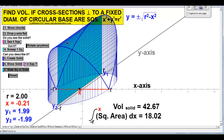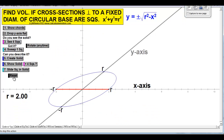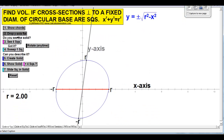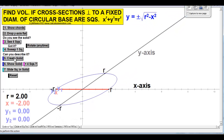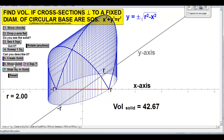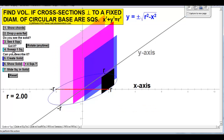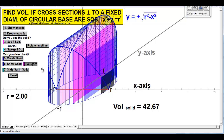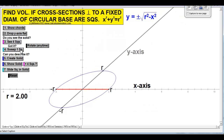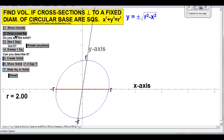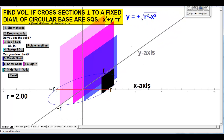This is what we're trying to find the volume of. Let's reset everything, drop the y-axis, and show the solid with four squares. That's the best view we have, and we're going to capture that and put it on our screen.